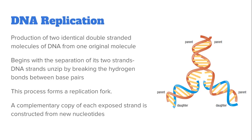This forms what we call a replication fork — two separate strands that now form a Y shape. The complementary copy of each exposed strand is then constructed from a bank of nucleotides that happen to be near the DNA molecules.